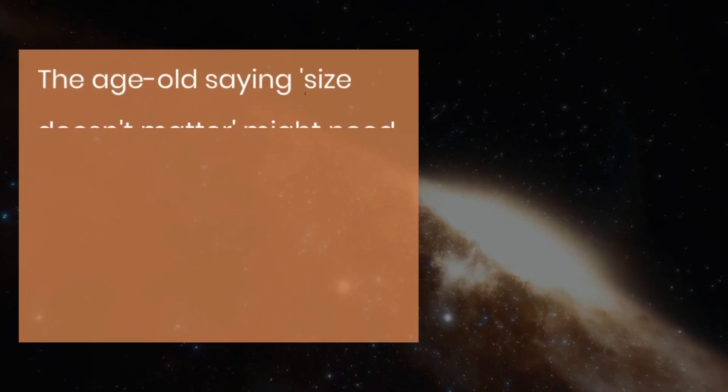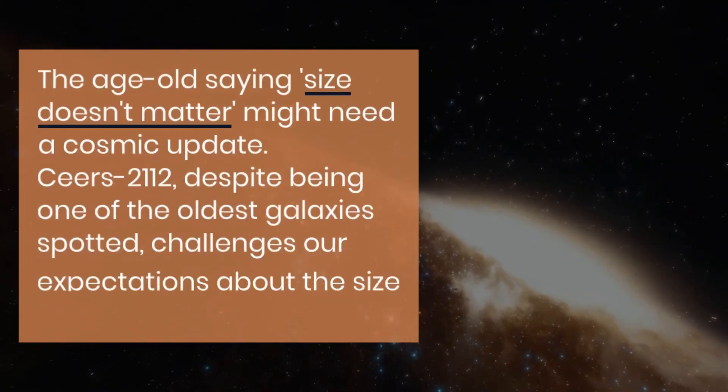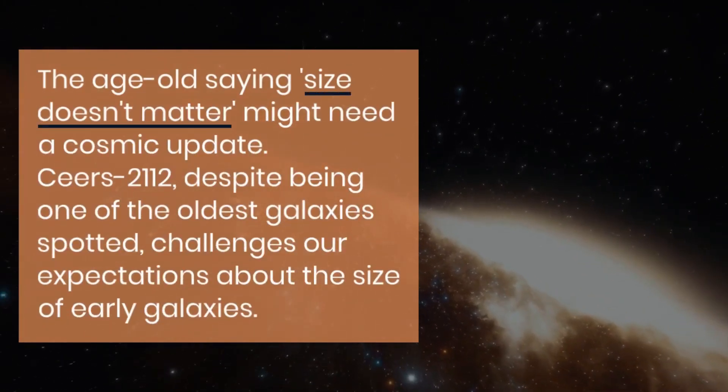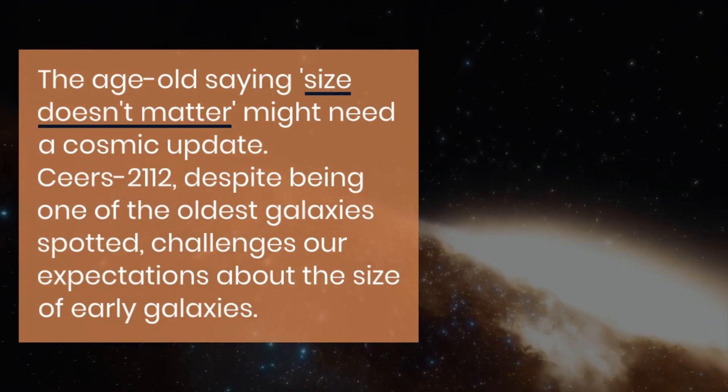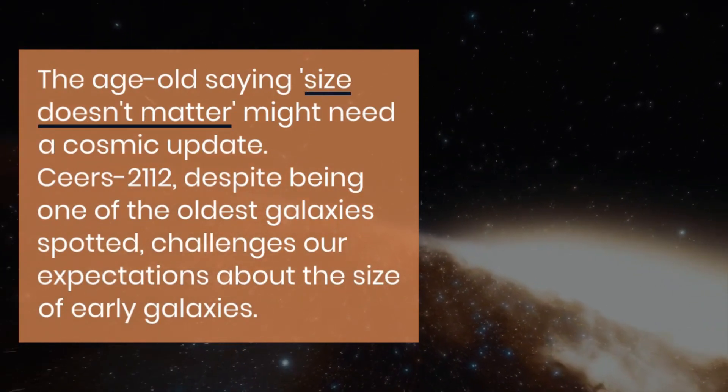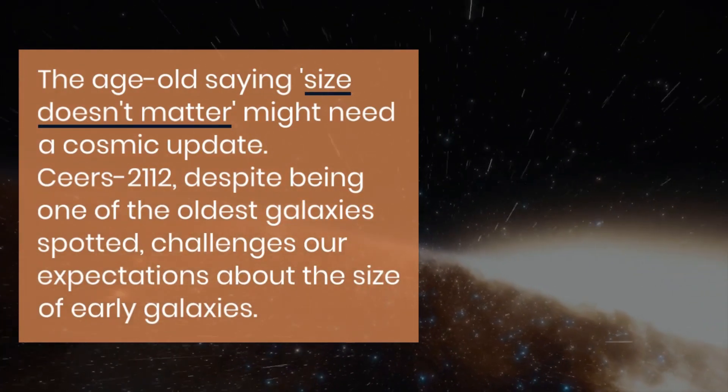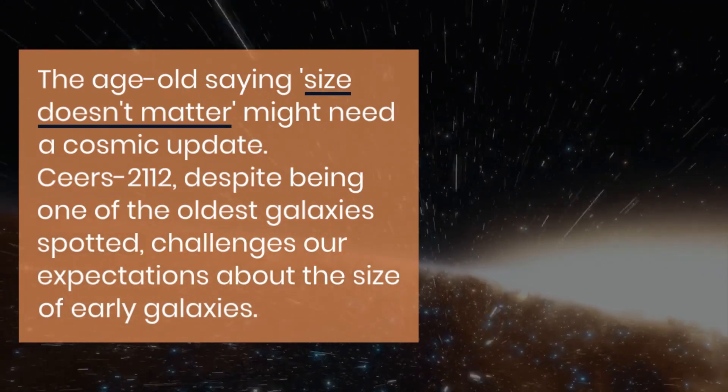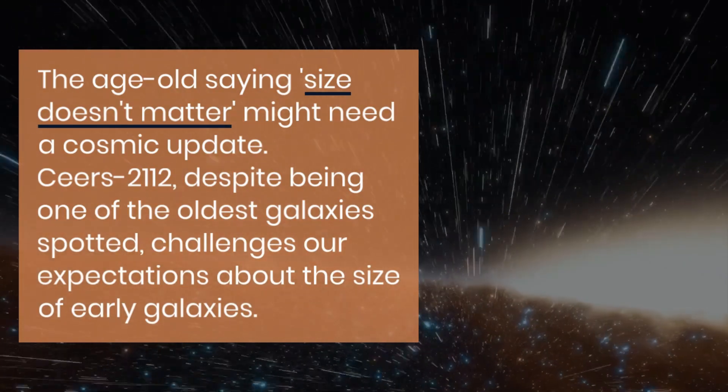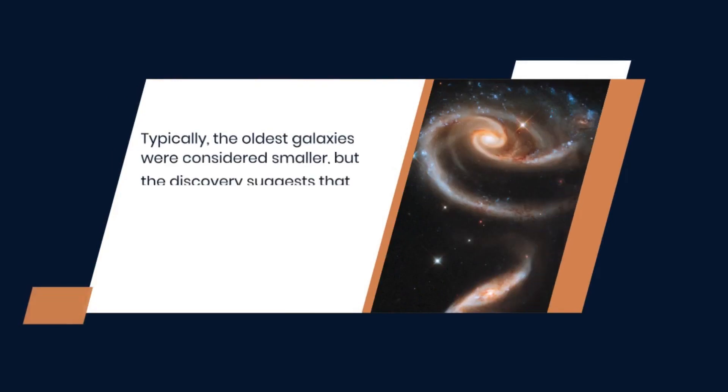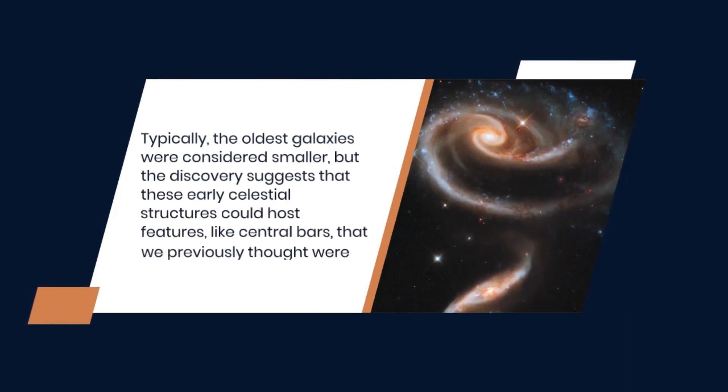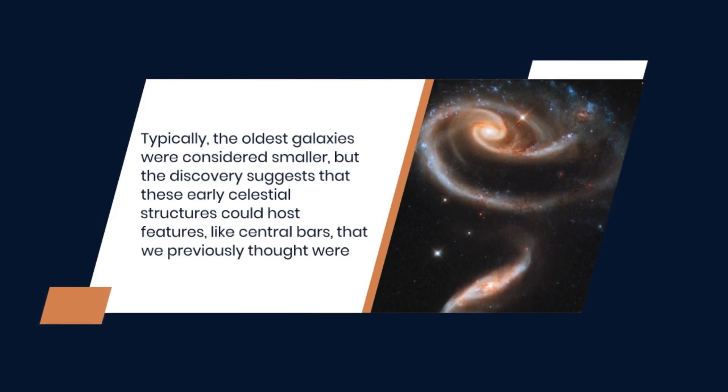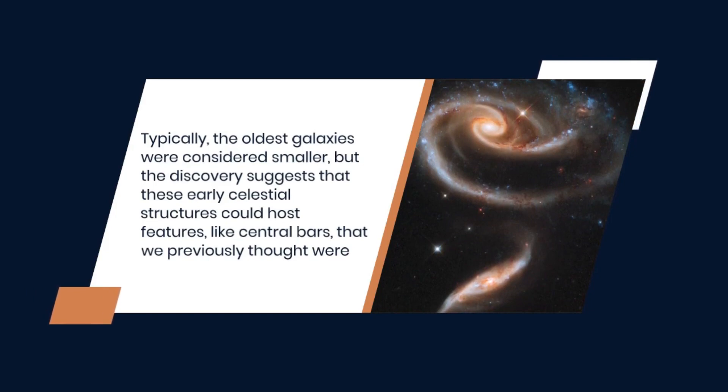The age-old saying size doesn't matter might need a cosmic update. Ceers-2112, despite being one of the oldest galaxies spotted, challenges our expectations about the size of early galaxies. Typically, the oldest galaxies were considered smaller, but the discovery suggests that these early celestial structures could host features, like central bars, that we previously thought were exclusive to larger, more mature galaxies.